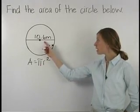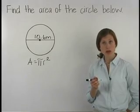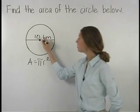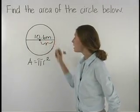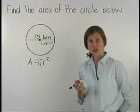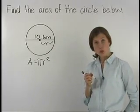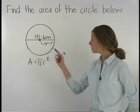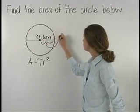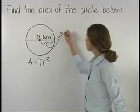Notice that here we're given the diameter instead of the radius. Remember that the radius is equal to half of the diameter, so the radius of this circle will be equal to half of 10.6 meters, or 5.3 meters.